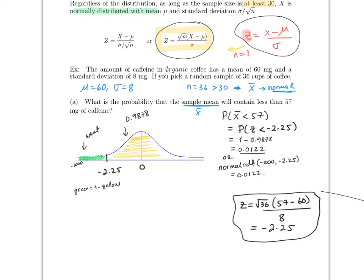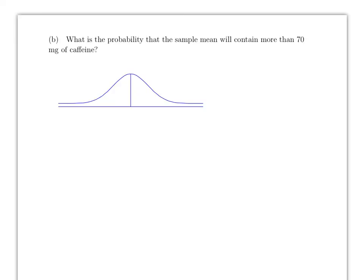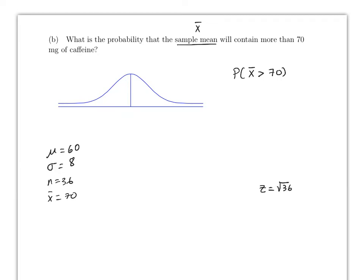Using the same information — μ = 60, σ = 8, n = 36 — let's do part B. Part B asks: what is the probability that the sample mean x̄ is more than 70? So x̄ = 70 and we want P(x̄ > 70). We apply the formula: z = (√36)(70 − 60) / 8 = 7.5. Therefore this is the same as P(z > 7.5).